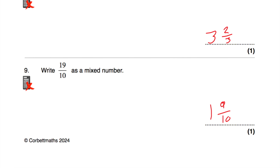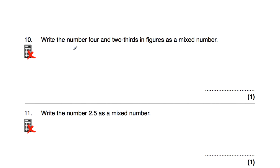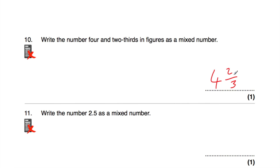Question number 10: write the number 4 and 2 thirds in figures as a mixed number. As a mixed number, 4 and 2 thirds — that's going to be 4 and then 2 thirds. And that's a mixed number.